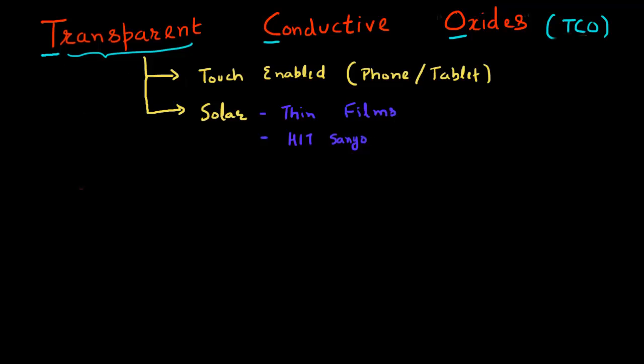Now one of the main challenges with these TCO materials lies in the first two letters or the first two adjectives that I've used to describe this TCO material. So these TCO materials, they are essentially oxides, they are metallic oxides typically, and the challenge is these two adjectives that I've used to describe this oxide.